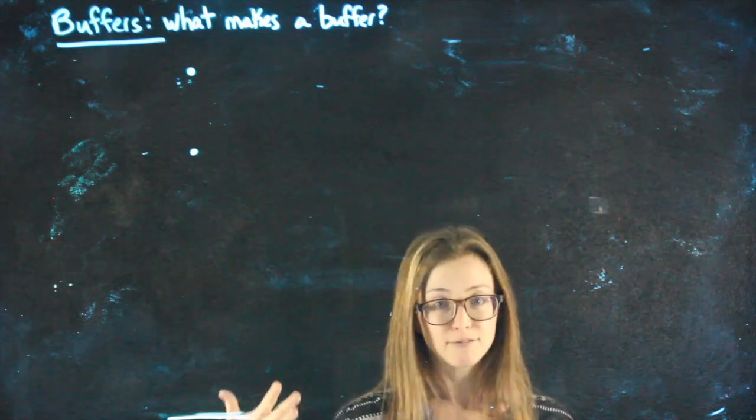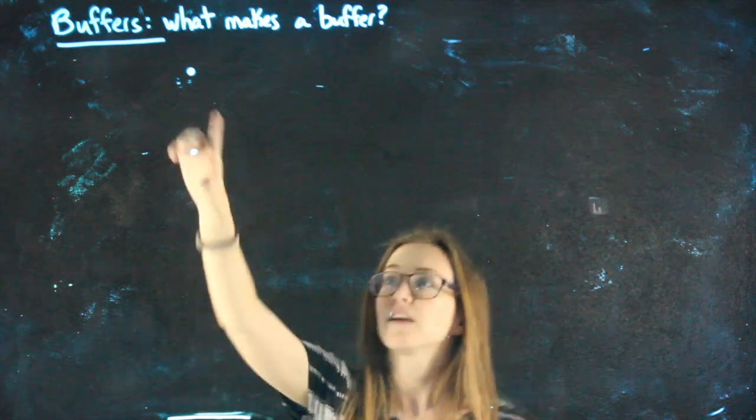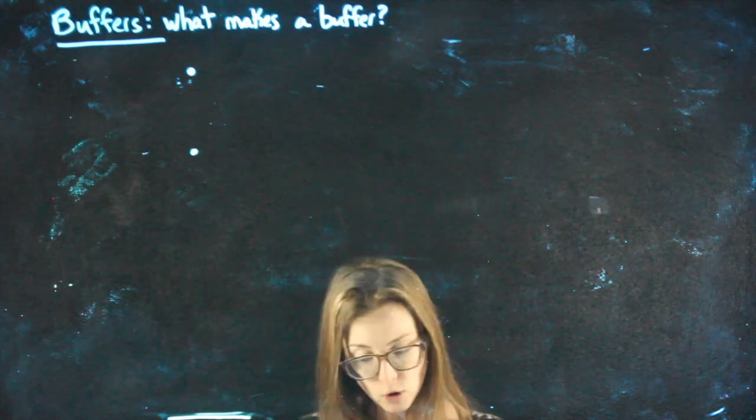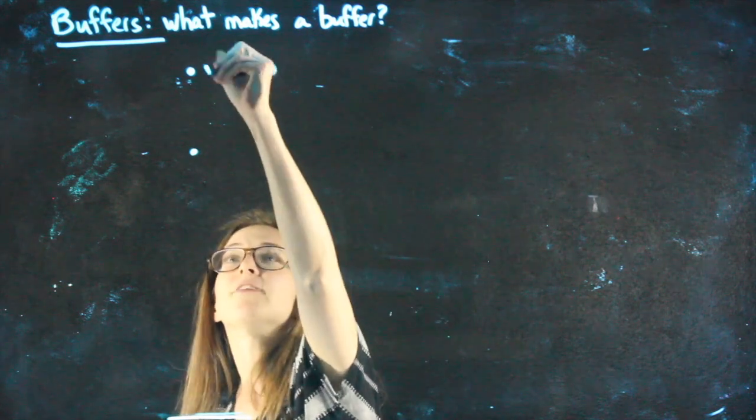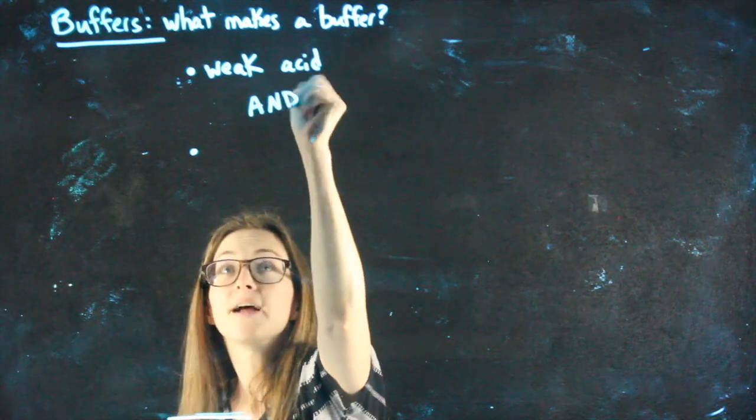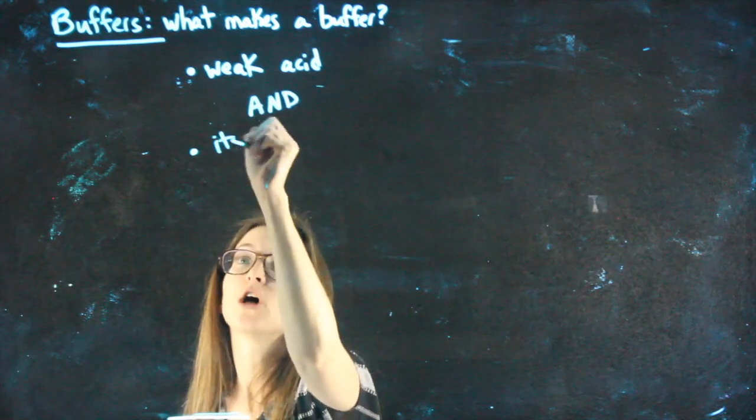So, what do you need in order to have a buffer? What makes up a buffer? There are two conditions. You have to meet both of them. In order to have a buffer, you need to have a weak acid, and, not or, but and, its conjugate base.